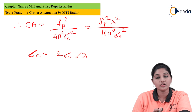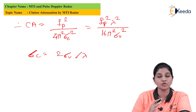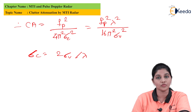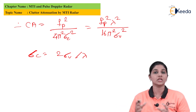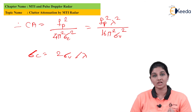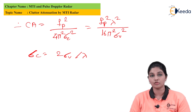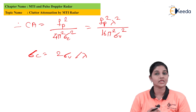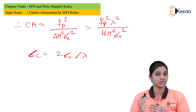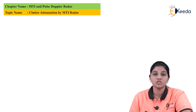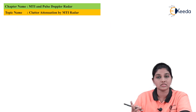The clutter attenuation provided by a single delay line canceller is not enough to remove all the clutter present at the output of the MTI radar. Therefore, we require cascading a number of single delay liners so that they can remove the clutter signals present at the output of the MTI radar. For the cascade form, we consider that two single delay line cancellers are used.